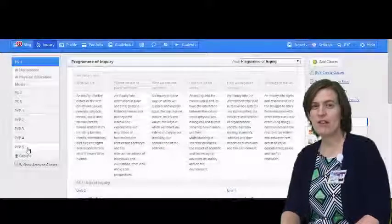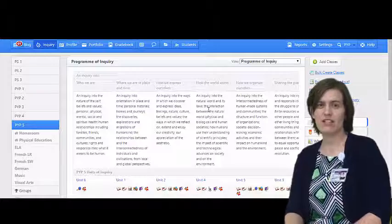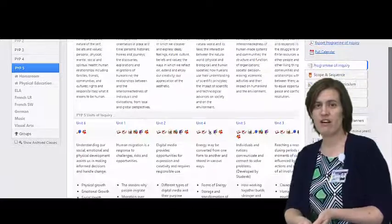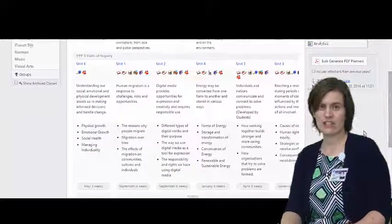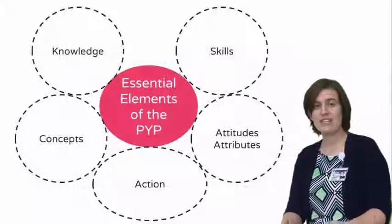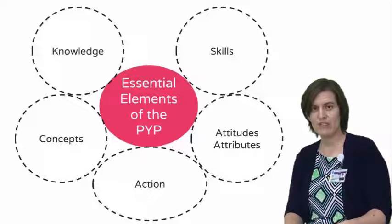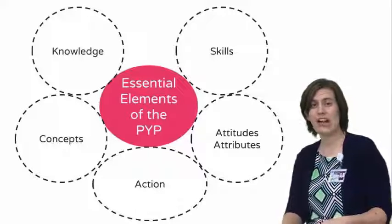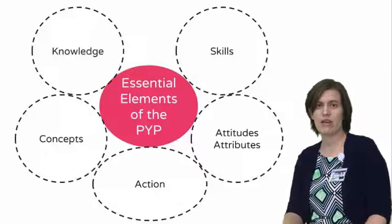We put the five elements into practice by creating units of inquiry, and students have six units of inquiry throughout the year. In a unit of inquiry you'll clearly see all five essential elements: the knowledge, the things that students are understanding; skills, what they're doing; they'll be displaying particular attitudes and attributes; the concepts will drive the questions that not only the teacher asks but also the student; and you'll see clear actions coming out of that unit of inquiry.